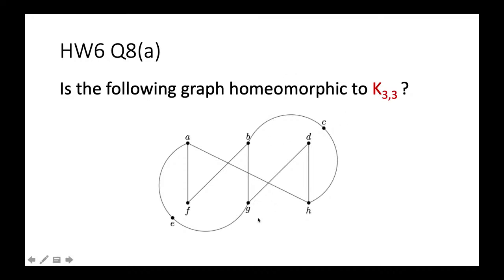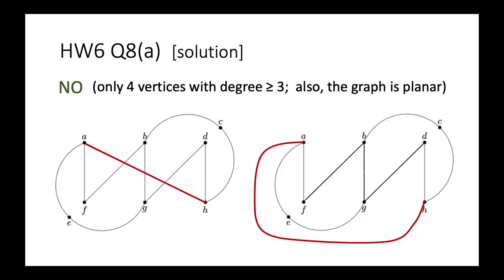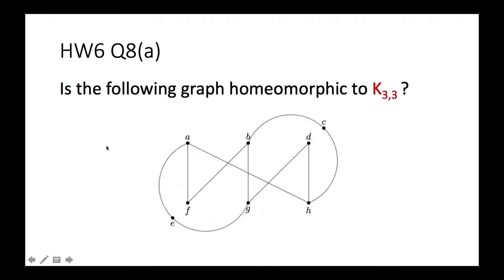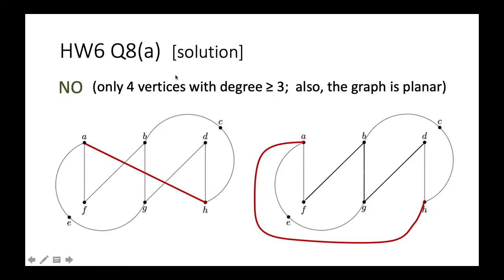To find out whether this graph is homeomorphic to K3,3, it is easy to see that it is not — because in this original graph we have only four vertices with degree equal to three. But for K3,3 we need six vertices with degree equal to three. Since subdivision or smoothing cannot create new degree-three vertices, this graph cannot be homeomorphic to K3,3.